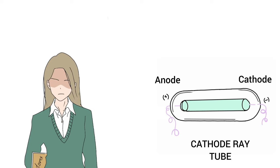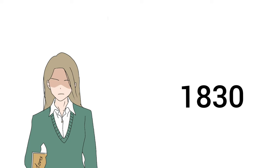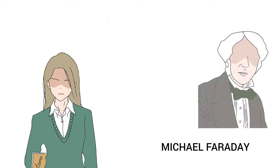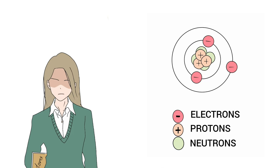During the mid-17th century, many scientists were studying electrical discharge in glass tubes called cathode ray tubes. In 1830, Michael Faraday conducted some experiments which suggested that atoms may contain particles that have electrical charges. However, the nature of these charges was not understood yet.